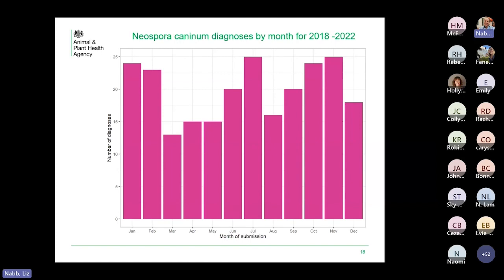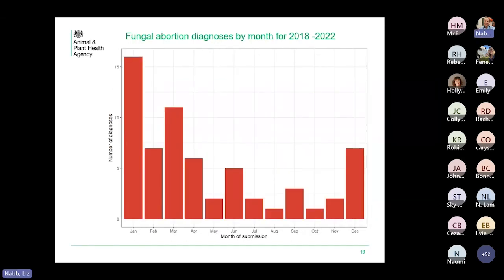Looking at diagnoses by month might give us a clue about risk factors for these causes of abortion. With Neospora, we can say there isn't really a seasonal pattern. But here's the diagnosis of fungal abortion by month — and as you can see, this is a real winter problem. It's worth remembering that if you have some bedding or poorly stored forage full of fungal spores, you can get an abortion outbreak — and this is what we're seeing here.